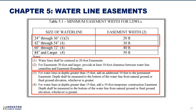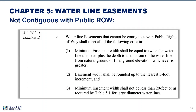Water line easements not contiguous with the public right-of-way must now meet all of the following requirements. It is clarified that the width of the easement is equal to twice the water line diameter plus the depth to the bottom of the water line. A new requirement rounds the easement width to the nearest five-foot increment. Although the minimum easement width of 20 feet was not changed, a new reference to Table 5.1 large diameter waterline easements was added.